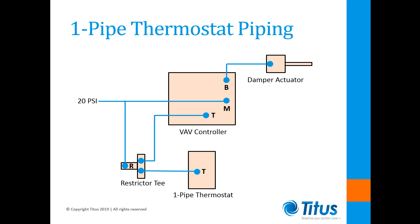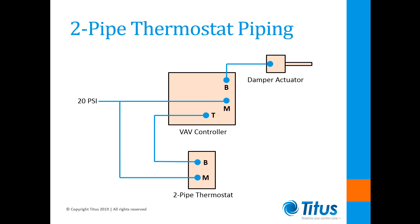Now let's look at a two-pipe thermostat application. As you can see, the two-pipe thermostat doesn't require the addition of a restrictor tee because it includes an internal restrictor. This makes the piping much more straightforward — simply supply 20 psi main air to the thermostat main air port and then connect the thermostat branch port to whatever device you want to control.